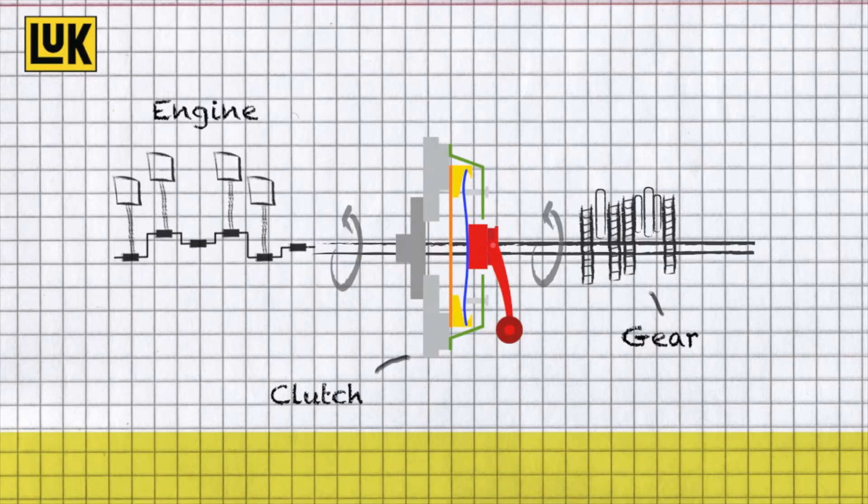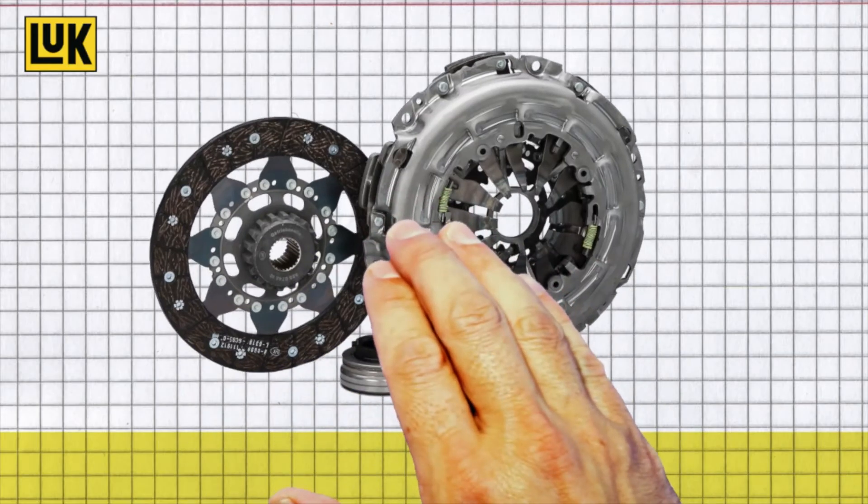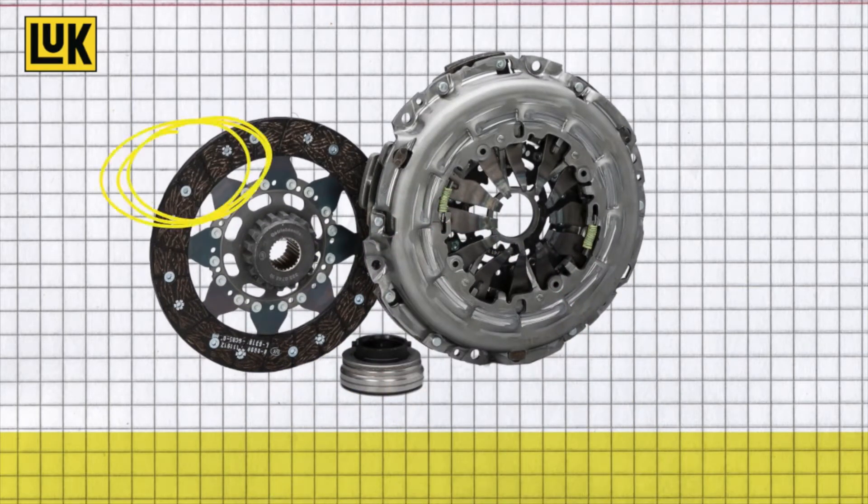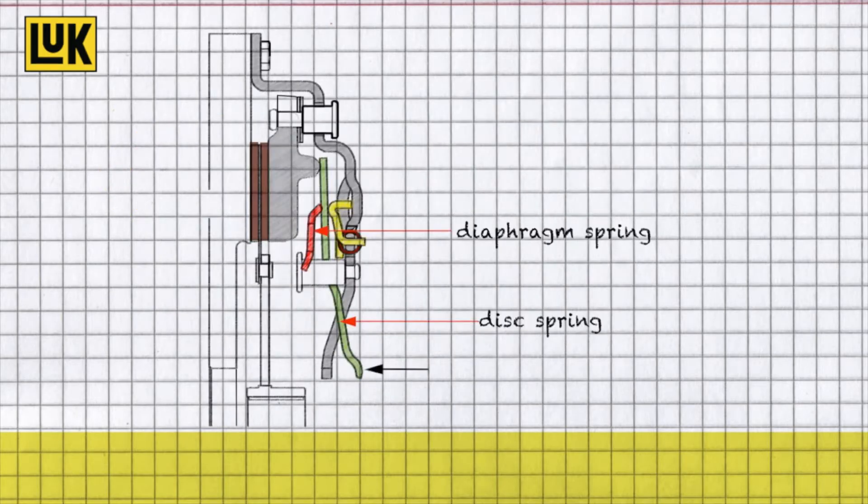With each engagement, the clutch pressure plate and disc are subject to wear. Especially the clutch disc and clutch lining are designed as wearing parts. Through normal wear and tear during the service life, the clutch plate lining is worn down.